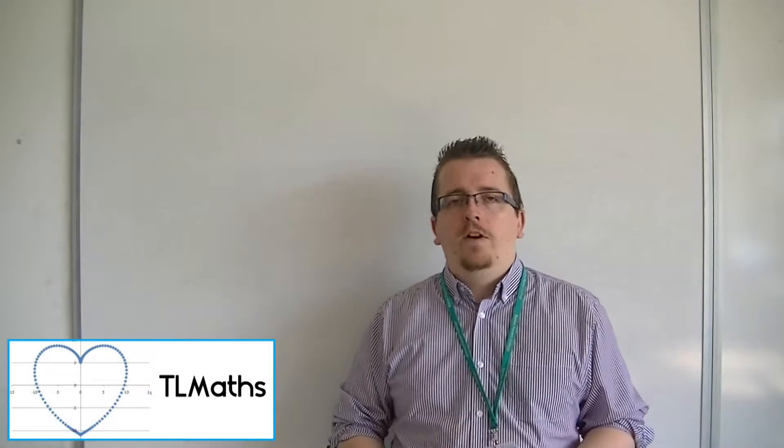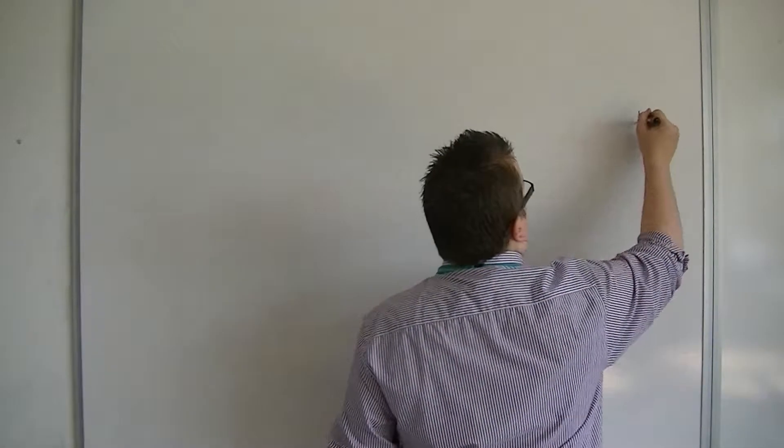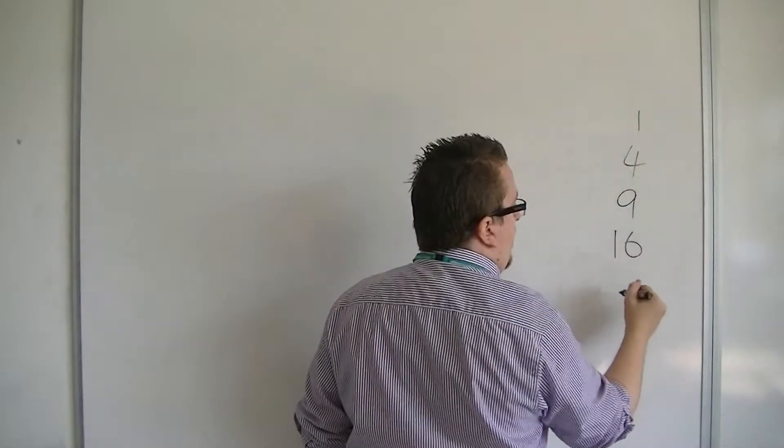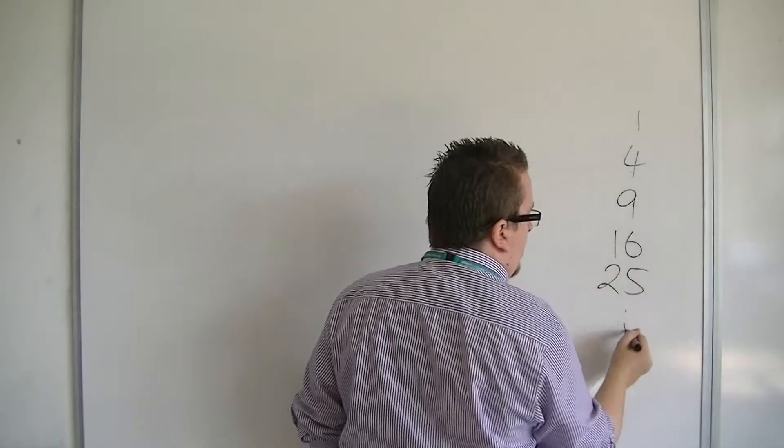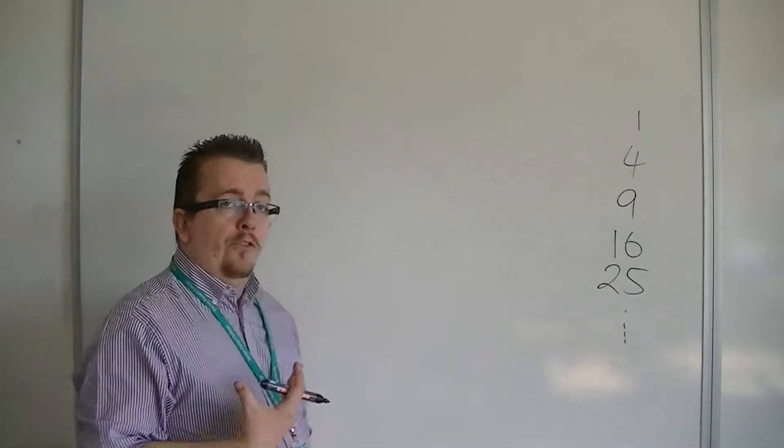The trick to simplify a surd is really knowing your square numbers. So the square numbers: 1, then 2 squared is 4, 3 squared is 9, 4 squared is 16, 5 squared is 25, and so on. It's very important that you know your square numbers.